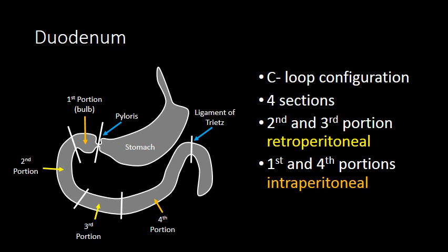The second and third portions of the duodenum make up the C-loop and are retroperitoneal. In the second portion of the duodenum, the bile ducts empty into the duodenum through the ampulla of Vater. The third and fourth portions are less frequently involved with pathology. The fourth portion of the duodenum is also intraperitoneal, like the first portion.